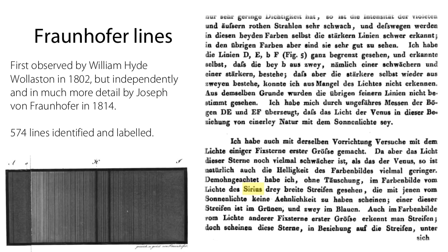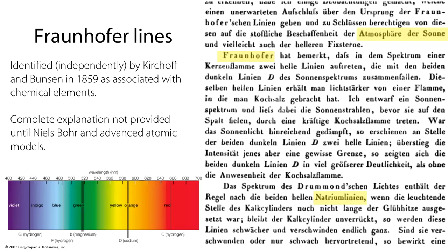He was our first stellar spectra getter, but he thought they were a curiosity and he didn't know what they were. That didn't happen for another 40 or 50 years or so, and Kirchhoff and Bunsen, also working in Germany in 1859, established by experiments that these lines corresponded to chemical elements.